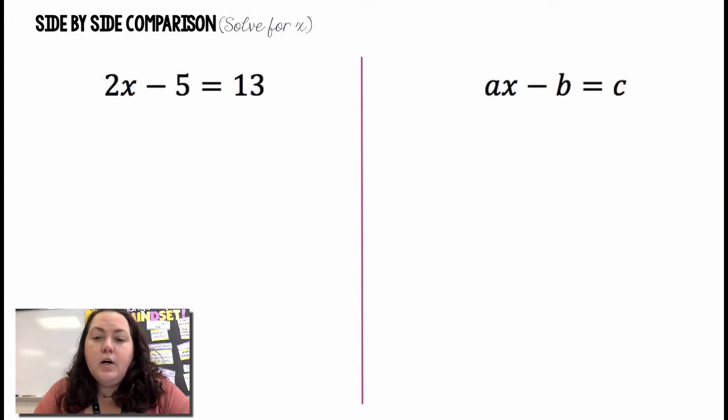Okay, but we're going to do this first problem and it's a side by side comparison. So on the left side we have 2x minus 5 equals 13 and on the right side I have ax minus b equals c. We're going to follow the same steps on both of them except for on one we're going to actually be able to simplify because we have numbers and on the other one we're just going to rewrite it with the operations that we used.